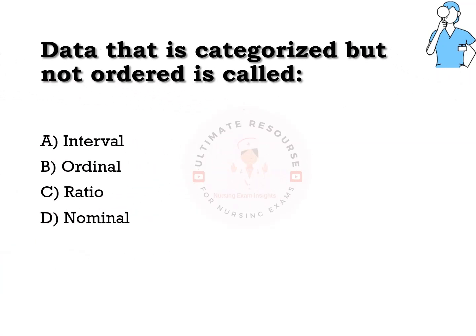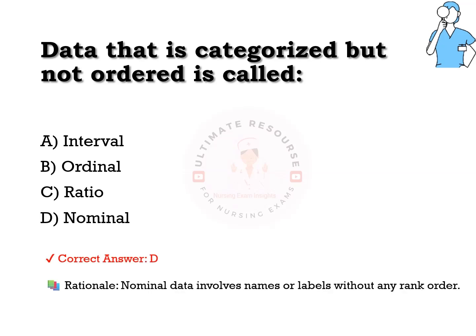Data that is categorized but not ordered is called: options are a) interval, b) ordinal, c) ratio, d) nominal. The answer is d) nominal. Nominal data involves names or labels without any rank order.